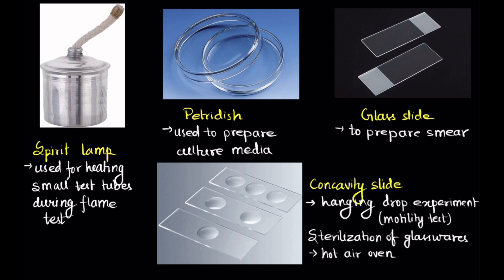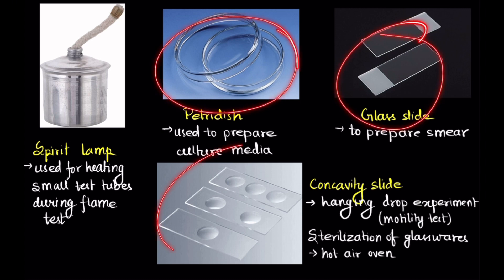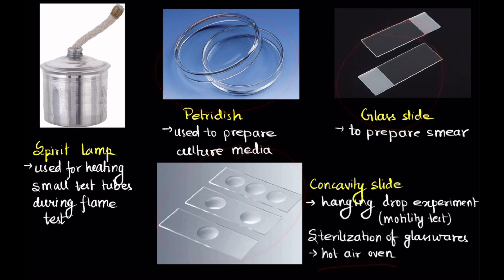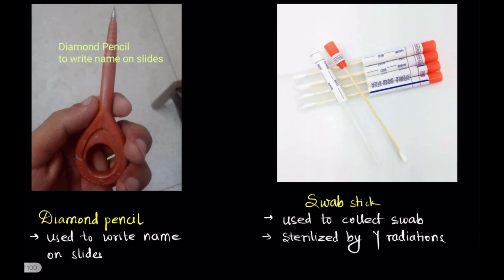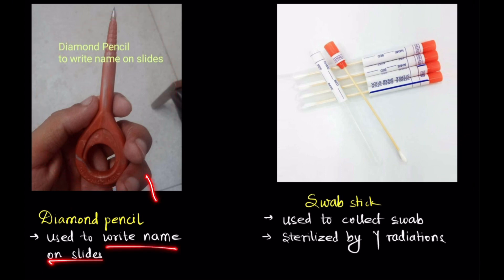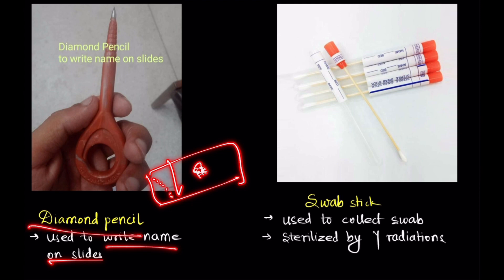The sterilization of all glassware is done in hot air oven. Here is your diamond pencil, which is used to write names on slides. Suppose you have a slide with a certain specimen and you want to write the name of this specimen on the slide — you will do that using a diamond pencil.